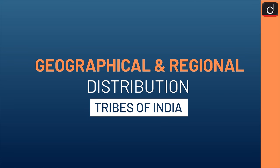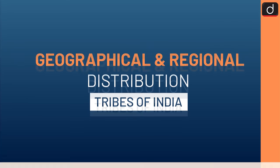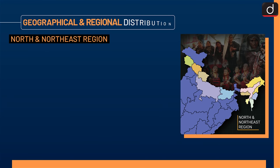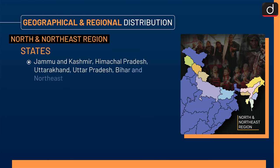Moving on to Geographical and Regional Distribution. First is the North and Northeast Region. States of this region are Jammu and Kashmir, Himachal Pradesh, Uttarakhand, Uttar Pradesh, Bihar, and the Northeast.